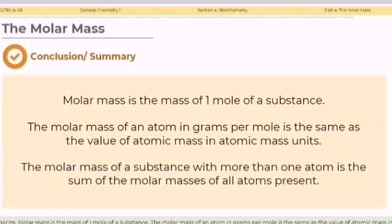To summarize, molar mass is the mass of one mole of a substance. The molar mass of an atom in grams per mole is the same as the value of atomic mass in atomic mass units. The molar mass of a substance with more than one atom is the sum of the molar masses of all atoms present.